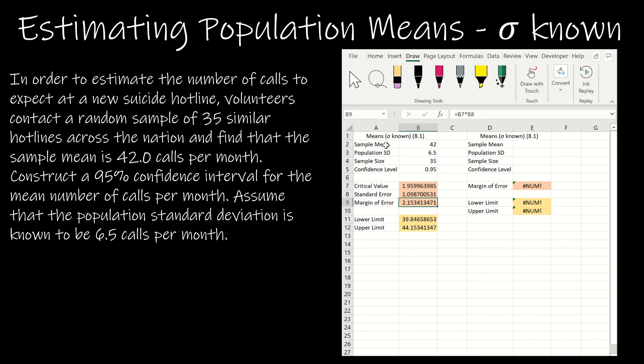Now, just as before, I'm going to take my sample mean, which is my point estimate. I'm going to subtract B9, which is the margin of error. And then I'm going to take the sample mean and add B9. So that's the confidence level is 39.8 to 44.2, which is the same thing that we found by hand.